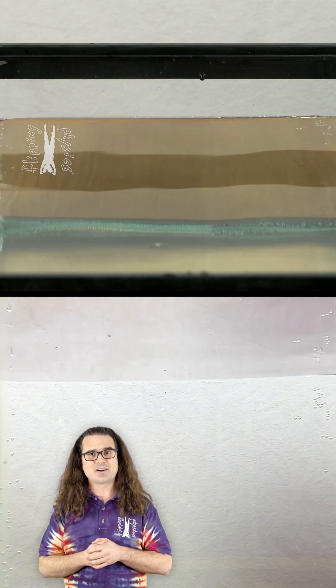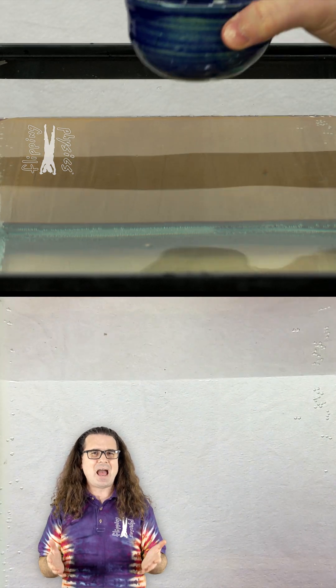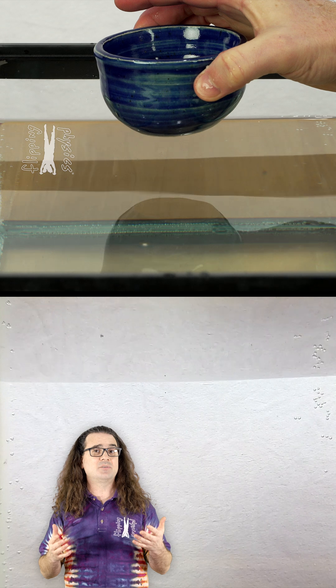Steel is more dense than water. So, you may be wondering, how can a boat made of steel float on water?